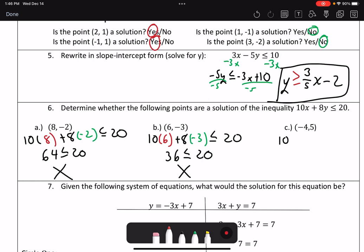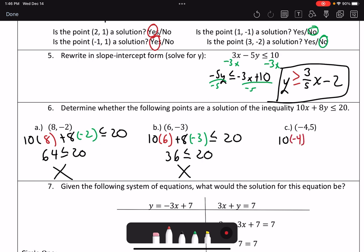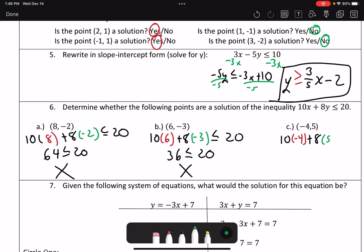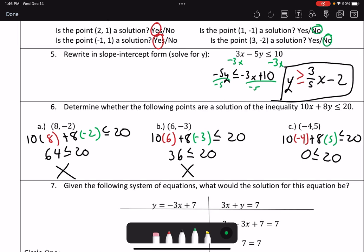Last but not least, I've got 10 times negative 4 plus 8 times 5. And I need to determine if that is less than or equal to 20. If I put that in the calculator, I've got 10 times negative 4 plus 8 times 5. That gives me the value of 0. Is 0 less than or equal to 20? Absolutely, it is. So this would be our solution.